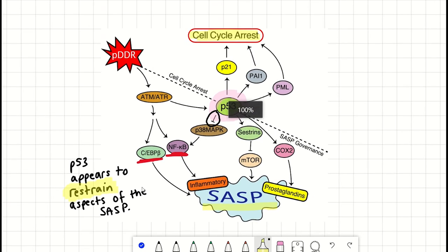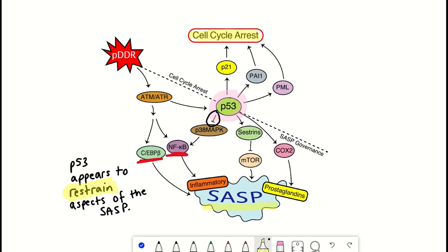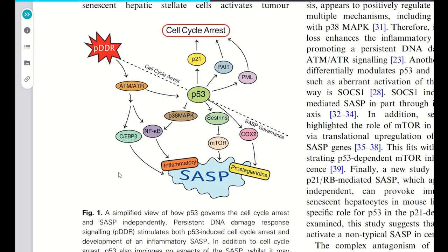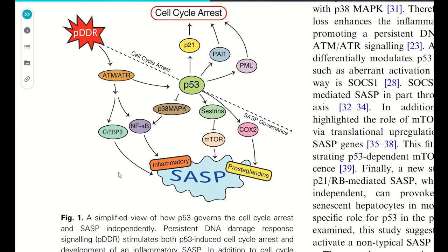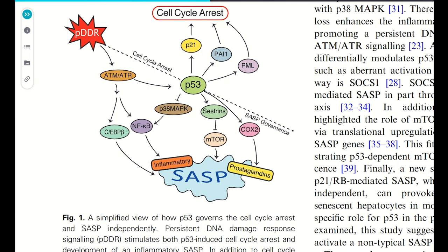And so it's important for me to highlight what I've written here, which is a simplified view of how p53 governs the cell cycle arrest and the SASP, as our view firstly isn't complete. But the second thing we were trying to highlight with this figure is that the two components, the cell cycle arrest and the SASP, seem to be decoupled. That is, you can repress one component without affecting the other.